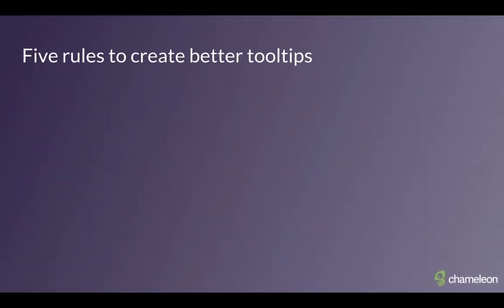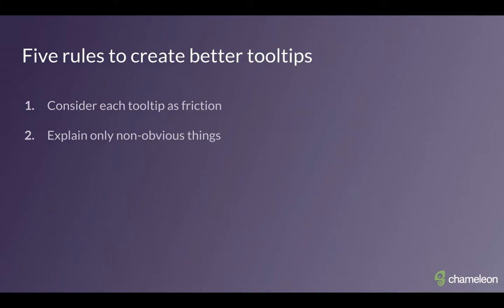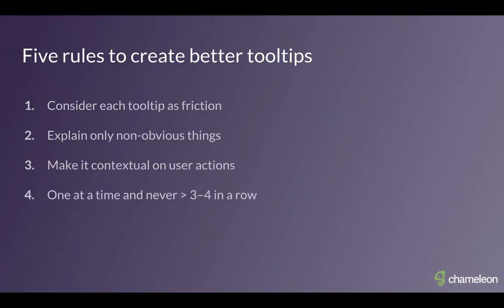Here are five rules to create better tooltips. Number one: think of each tooltip as friction. A user has to read, digest, and assess whether it's relevant — so make sure it's valuable, otherwise you're adding friction for no good reason. Number two: only explain non-obvious things. Number three: make it contextual — if it's relevant to the user's current flow, show the tooltip; don't break them out of their flow with something irrelevant. Number four: show one tooltip at a time, and if you have a flow with multiple tooltips, don't have more than three or four in a row — users can only digest so much.